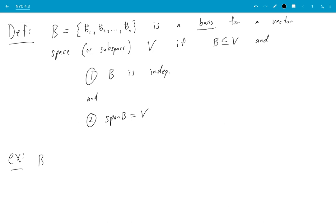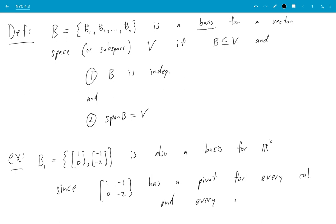So, let's try another one. Say B₁, which is equal to [1,0; -1,-2] is also a basis for R² since, same reason, it has a pivot for every column and every row.